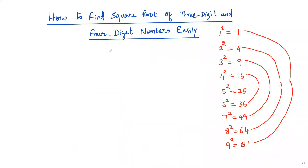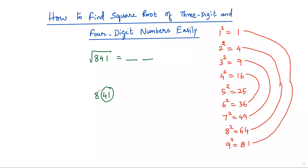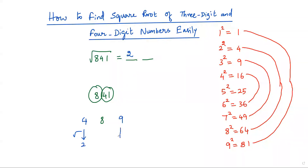Let's look at another example: √841. Since 841 is a perfect square, the result is a two-digit number. Splitting 841 into groups: 41 is one group and 8 is the other. The number in the first group is 8. 8 lies between perfect squares 4 and 9. The perfect square less than 8 is 4, so √4 = 2 is the first digit, and √9 = 3.